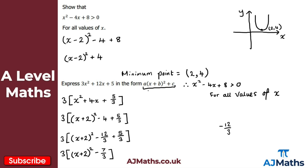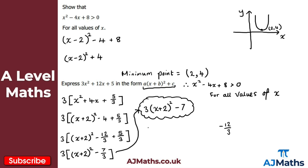We want it in the form a(x+b)² + c. At this point we're not quite in the correct form, so we multiply through by the 3 on the outside. That gives us 3(x + 2)² and then 3 times minus 7/3, which is minus 21/3, giving us minus 7. So the answer is 3(x + 2)² minus 7. The values are a = 3, b = 2, and c = minus 7.